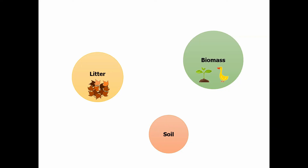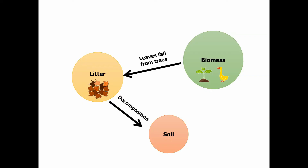Nutrients are constantly being moved between these stores and also moving in and out of them. For example, if leaves fall from a tree they end up on the floor, moving nutrients from the biomass to the litter. Over time those leaves are broken down by worms, woodlice, and other decomposers, moving nutrients from the litter into the soil. Eventually those nutrients are taken up through the roots of the trees and become part of the biomass again. So we've got this constant cycle between the biomass, the litter, and the soil.